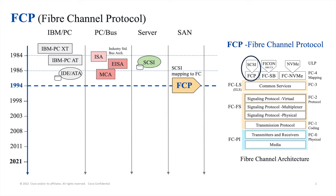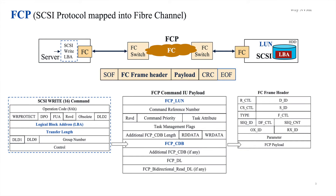When we are using Fibre Channel, it uses FCP — that is Fibre Channel Protocol — which is used to send SCSI commands over a Fibre Channel network. The SCSI commands are controlling the reads and writes and going through the disk at a very low level. One of the reasons why Fibre Channel is still popular today is because it's a very stable and reliable protocol.